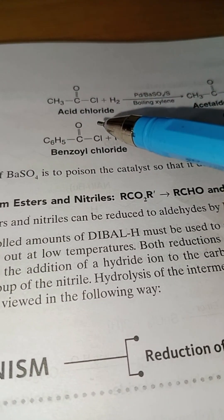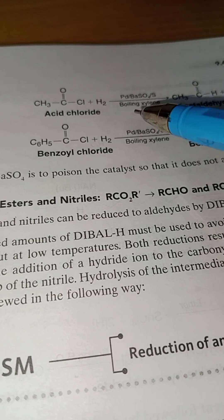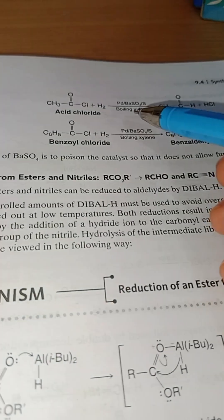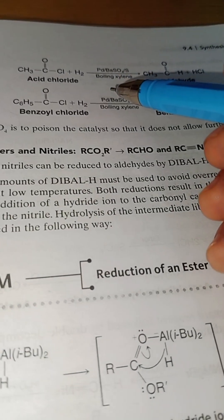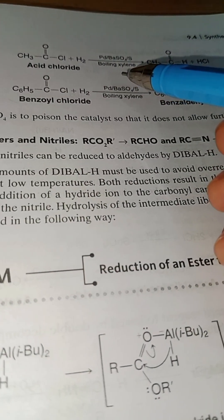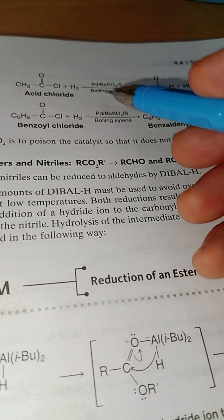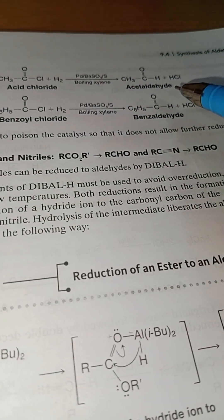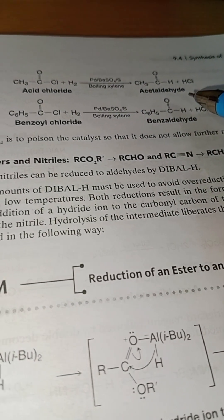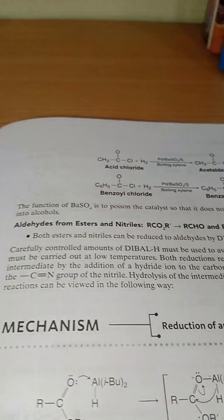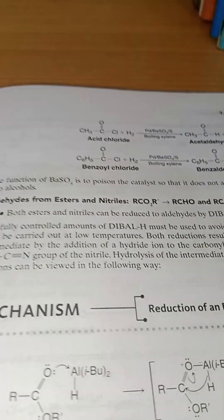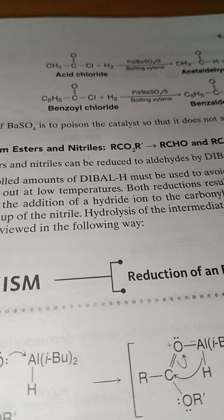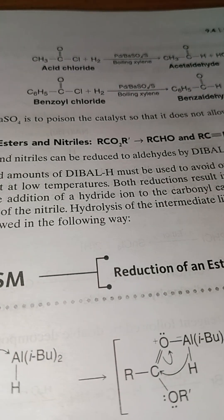In the Rosenmund reduction, acid chloride is treated with palladium, barium sulphate, and quinoline, and it converts to aldehyde. So now we have learned different procedures for the synthesis of aldehyde.